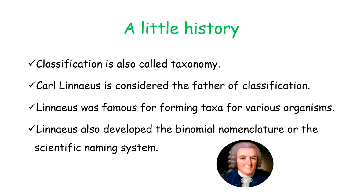A little history about the classification of living things: classification is also known as taxonomy. It was developed by Carl Linnaeus, who is considered the father of classification. Carl Linnaeus was famous for forming taxa for a great number of organisms, and he also developed what they call binomial nomenclature, or the scientific naming system, which was very instrumental in naming and grouping organisms.